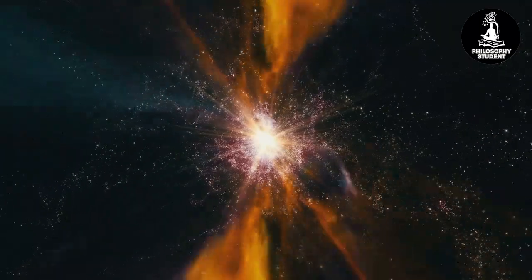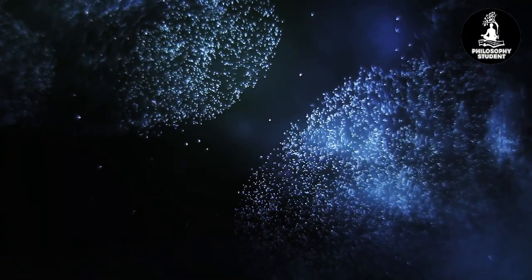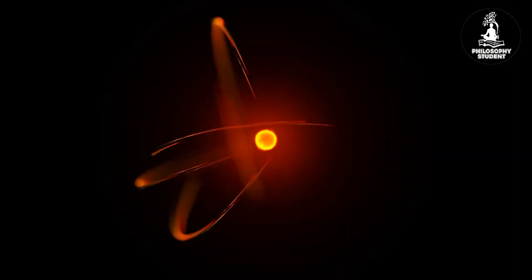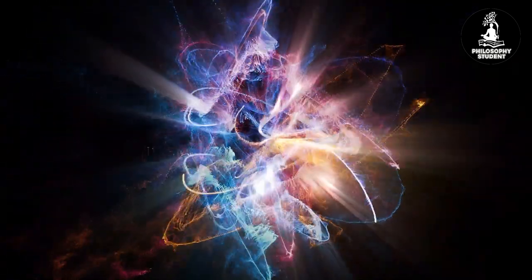Leucippus formulated a cosmology in which worlds are formed by groups of atoms that coalesce in a cosmic vortex. This forces the atoms to separate out and sort themselves by like kind. The circulating atoms create a membrane of atoms which encloses others within it.